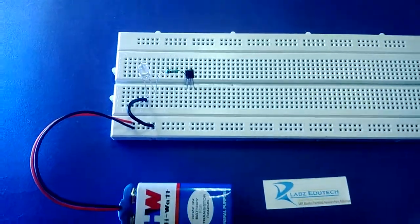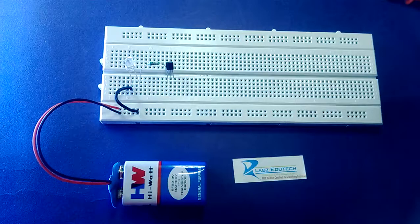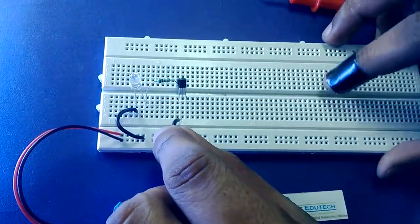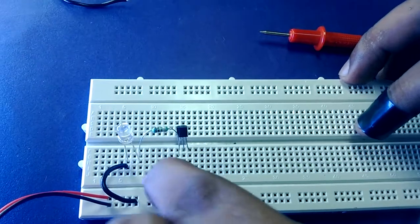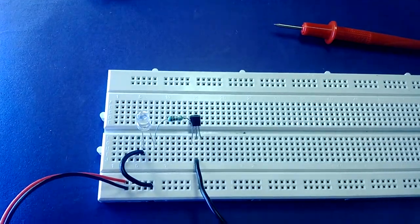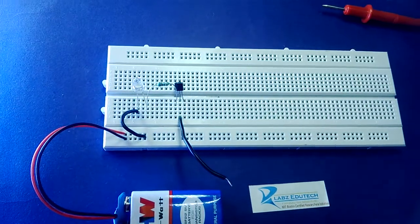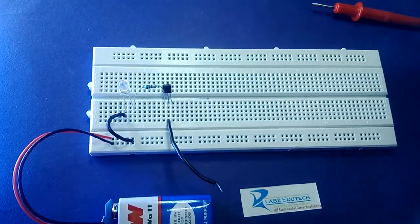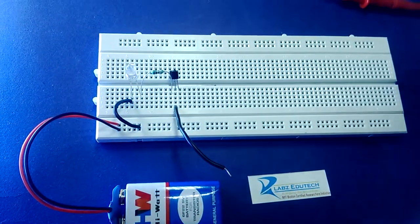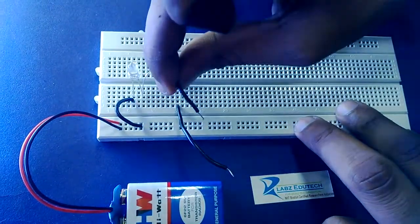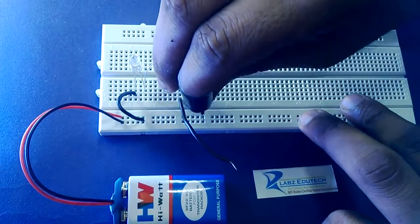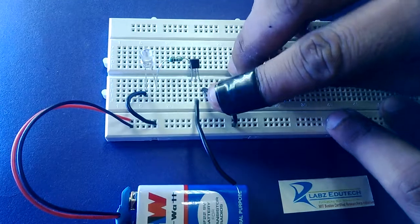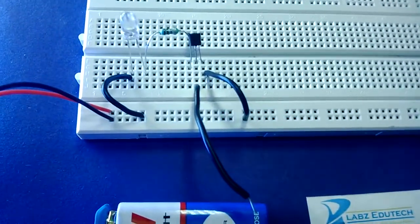So moving ahead, we are going to have a wire in the base, the second terminal. Now moving ahead with the circuit, this magical touch circuit, we are going to have an emitter again in the ground state, a common emitter configuration. You can see common emitter configuration. This has been connected with the ground.